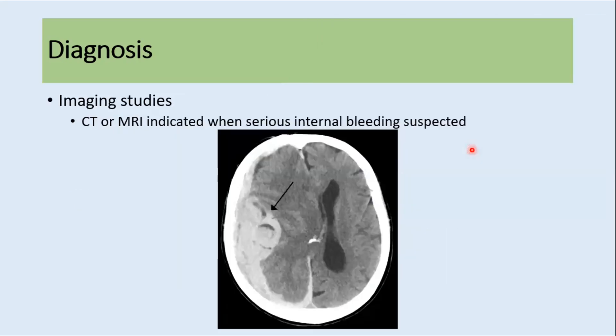Regarding imaging studies, CT scan or MRI are indicated when there is suspicion of bleeding such as intracranial or peritoneal bleeding.